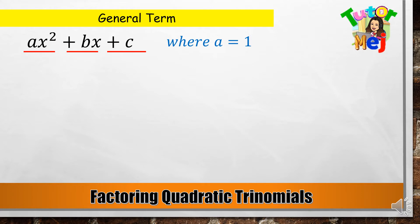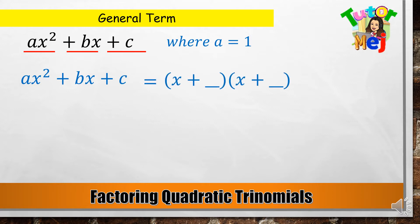Simulan natin. AX squared plus BX plus C is equal to (X plus a factor of C) times (X plus another factor of C). Take note: pag positive ang C, ibig sabihin pareho ang magiging sign ng factors ng C. Ibabasin natin ito sa ating middle term — ito yung positive. Kaya meron tayong factors na (X plus a factor of C) times (X plus another factor of C).